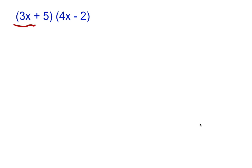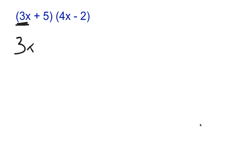Let's try another one. We have two binomials: (3x plus 5) and (4x minus 2). We take the first term of the first binomial, which is 3x, and multiply it by the second binomial, 4x minus 2.